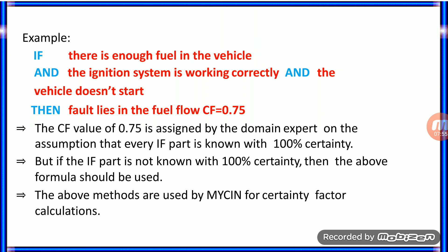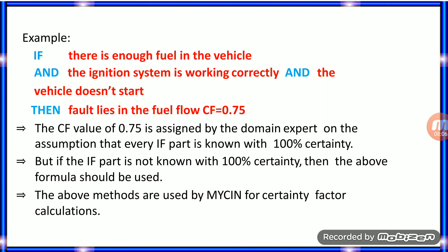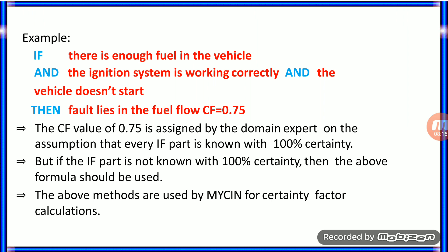For example: if there is enough fuel in the vehicle, and the ignition system is working correctly, and the vehicle does not start, then the fault lies in the fuel flow — with a certainty factor of 0.75. The CF value of 0.75 is assigned by the domain expert on the assumption that every if-part is known with 100% certainty. But if the if-part is not known with 100% certainty, then the chaining formula should be used. Only Mycin uses these methods for calculating CF.